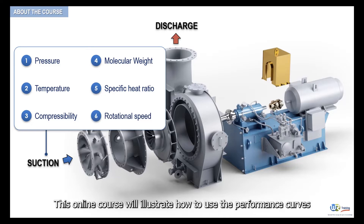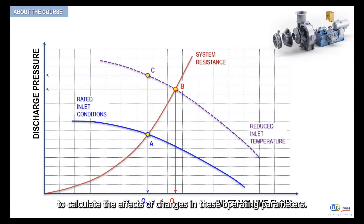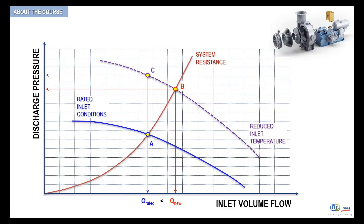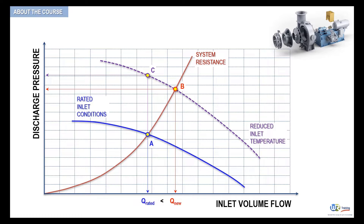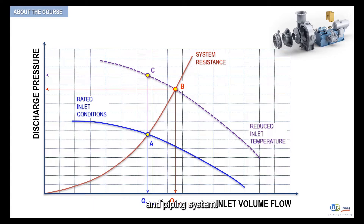Molecular weight, specific heat ratio of the gas, and compressor rotational speed strongly affect the performance of these machines. This online course will illustrate how to use the performance curves and a set of equations to calculate the effects of changes in these operating parameters, giving you the necessary tools to understand, evaluate, and predict both compressor performance and behavior for a successful operation of your plant and piping system.